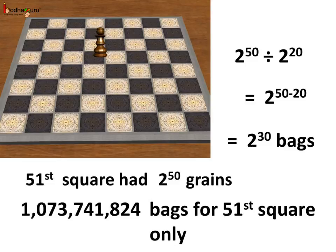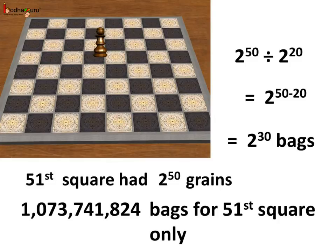For the fifty-first square, he would get 2 to the power 50 grains. So the bags required would be 2 to the power 50 divided by 2 to the power 20. That is 2 to the power 50 minus 20, equal to 2 to the power 30. So 2 to the power 30 bags were required just for the fifty-first square, and this amount was equal to 1,073,741,824 bags. That's a lot!